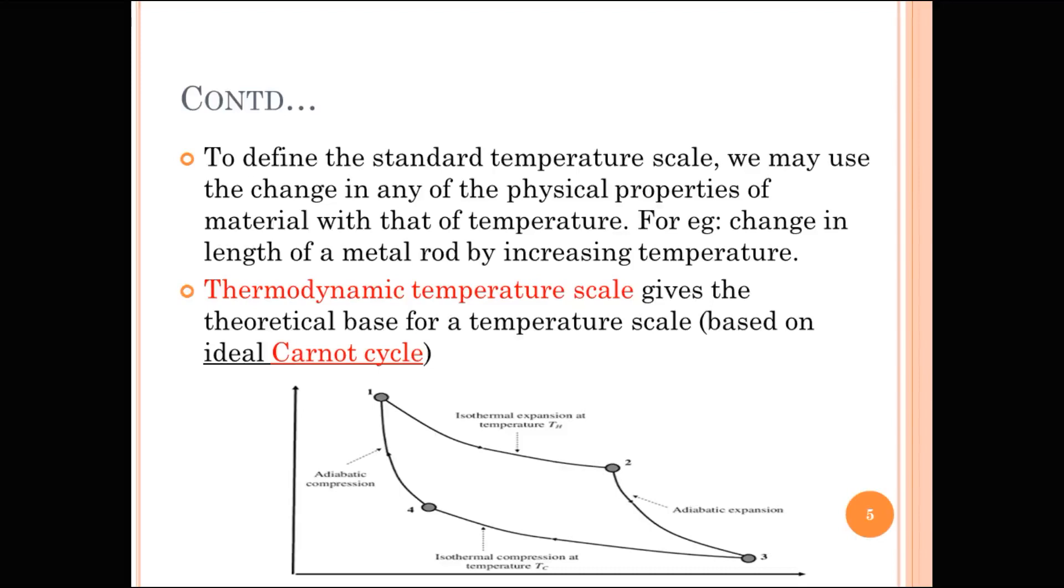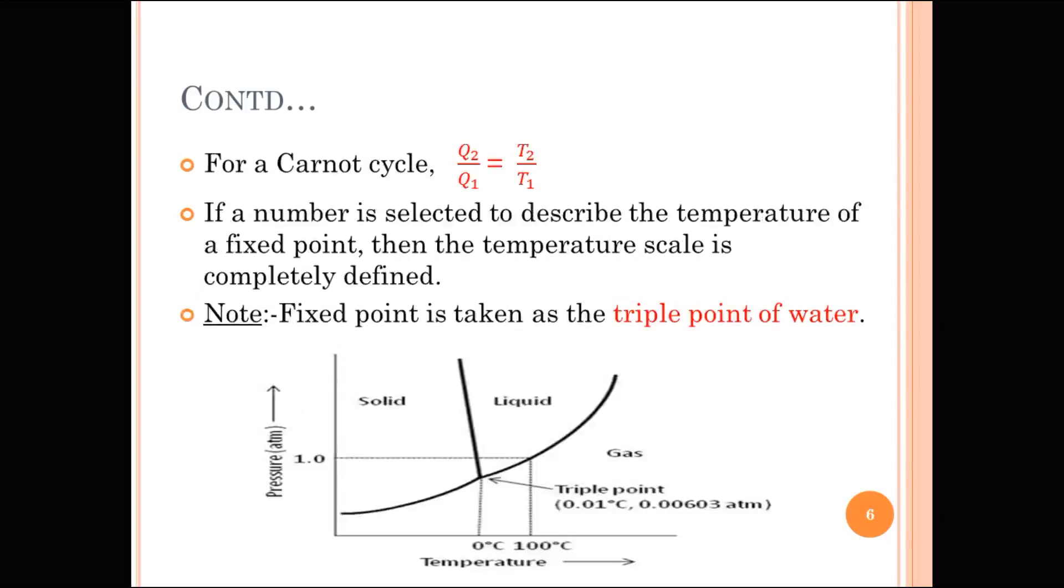The thermodynamic temperature scale gives the theoretical base for a temperature scale based on ideal Carnot cycle. Consider a perfectly reversible heat engine that transfers heat from a reservoir of infinite capacity at temperature T2 to another such reservoir at temperature T1. If the heat taken from reservoir 2 is Q2 and that of reservoir 1 is Q1, then according to Carnot cycle, the ratio of heat change will be equal to that of temperature. That means, Q2 by Q1 equals T2 by T1.